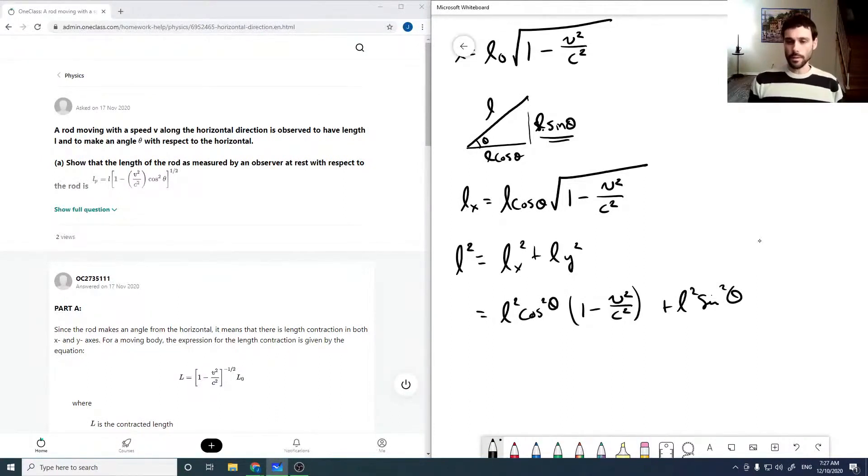And now summing the terms, or separating the terms, we have L squared cos squared theta plus sine squared theta minus an L squared cos squared theta, V squared over C squared. So just separating and collecting, that equals 1.